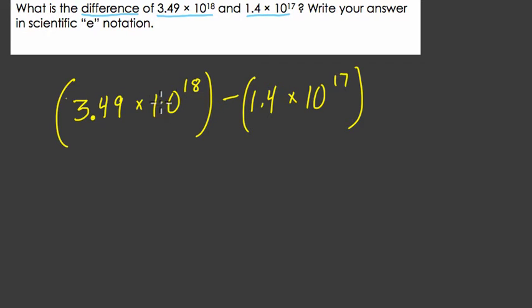So this looks pretty overwhelming, but when we're subtracting or adding in scientific notation, one great strategy is to get your powers of 10 to match each other. So here, 10 to the 17th is too small. I want it to match 10 to the 18th, and then I can just directly add or subtract my two first factors here, which makes life a lot easier.